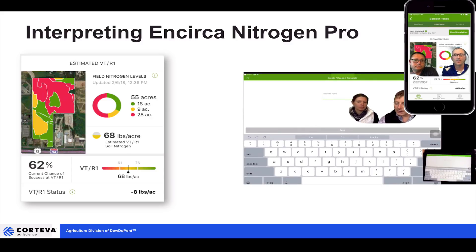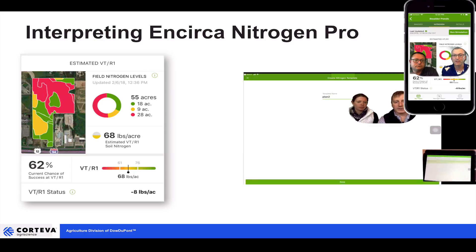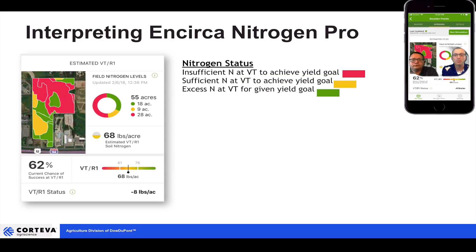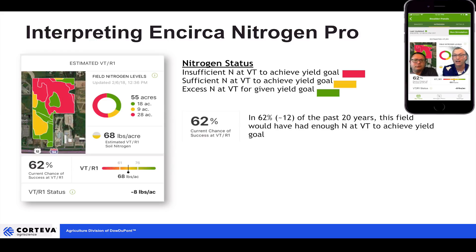So we get into the Encirca nitrogen pro app. This is just a screenshot looking at a field and it's giving you a lot of different colors. It's important to understand what that's telling us from a color standpoint. Where we see green, that's telling us we've probably got enough nitrogen to get us through to tassel time based on that yield goal. When we get into yellow, that's going to say it's probably sufficient. And where we're red, that's going to tell us that we're probably running a little bit short and we're not going to have enough.